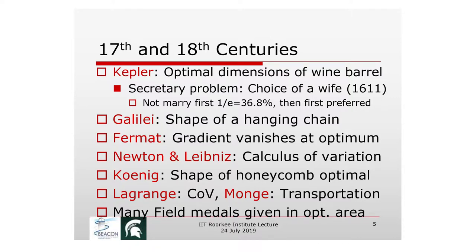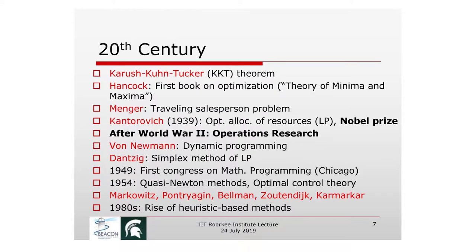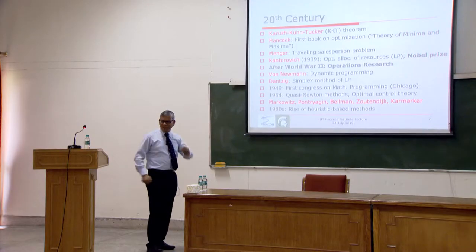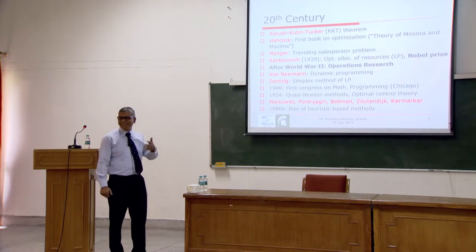Galileo talked about the hanging chain and its optimal shape. The calculus of variations, transportation problems, and many other fields contributed — several Fields Medals in mathematics went to people doing optimization-related research. In the 19th century, big names emerged: the steepest descent method appeared, and Fourier first proposed the idea of linear programming. In the 20th century, serious developments happened — the Karush-Kuhn-Tucker (KKT) conditions, which we still use today, and Hancock's first book on optimization.